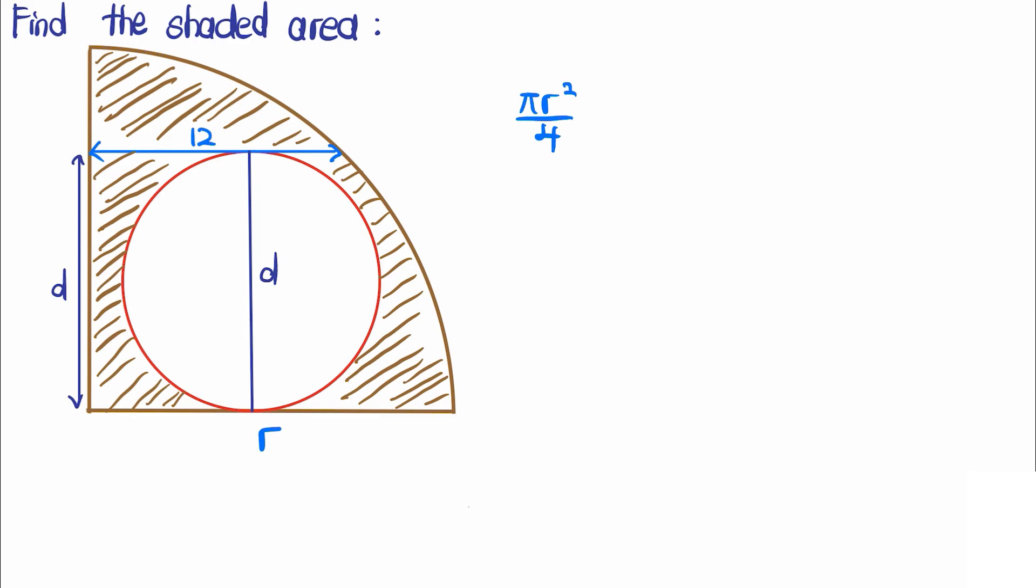There is a right angle triangle over here which we can complete because the length here is actually r. By the Pythagorean theorem, we actually get that r² is equal to d² plus 12².